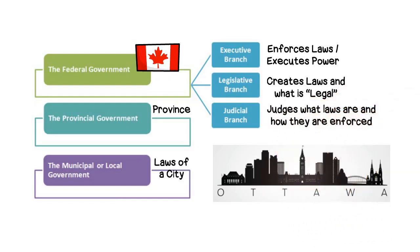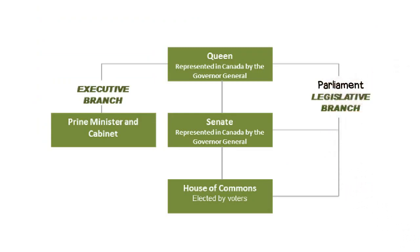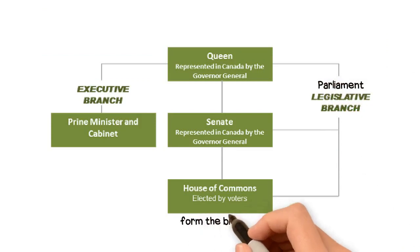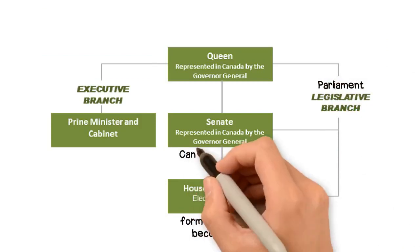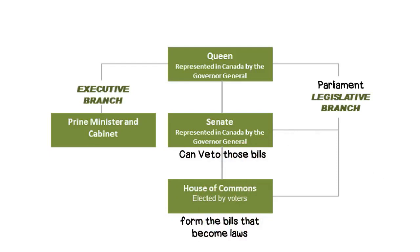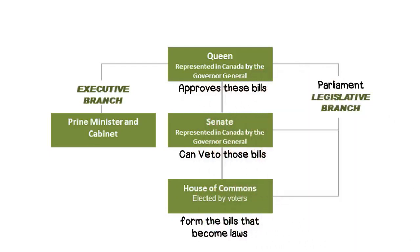The legislative branch, also known as Parliament, has three branches itself: the House of Commons, where they form the bills that become laws; a Senate, which can veto those bills; and the Queen herself, who approves these bills.